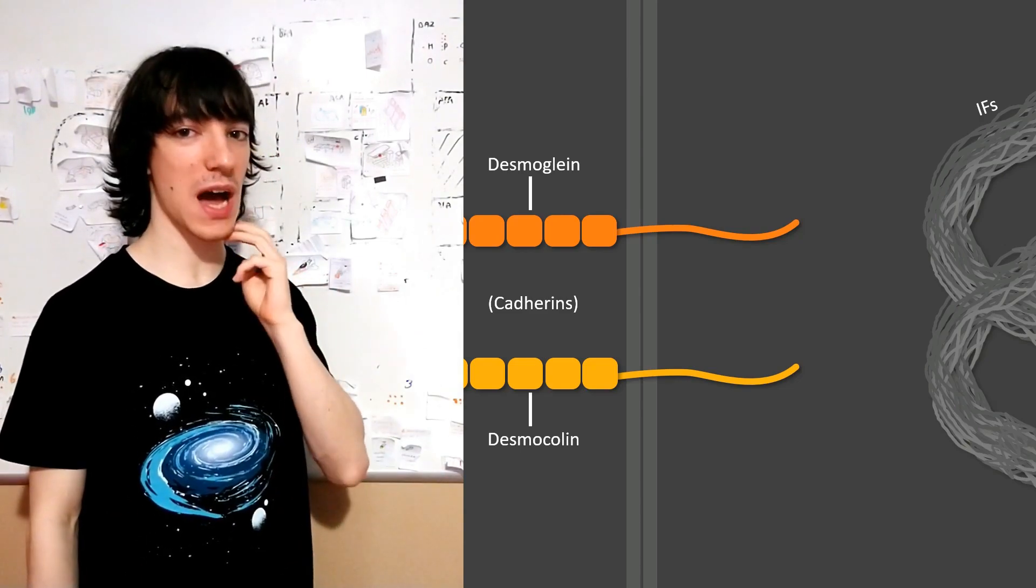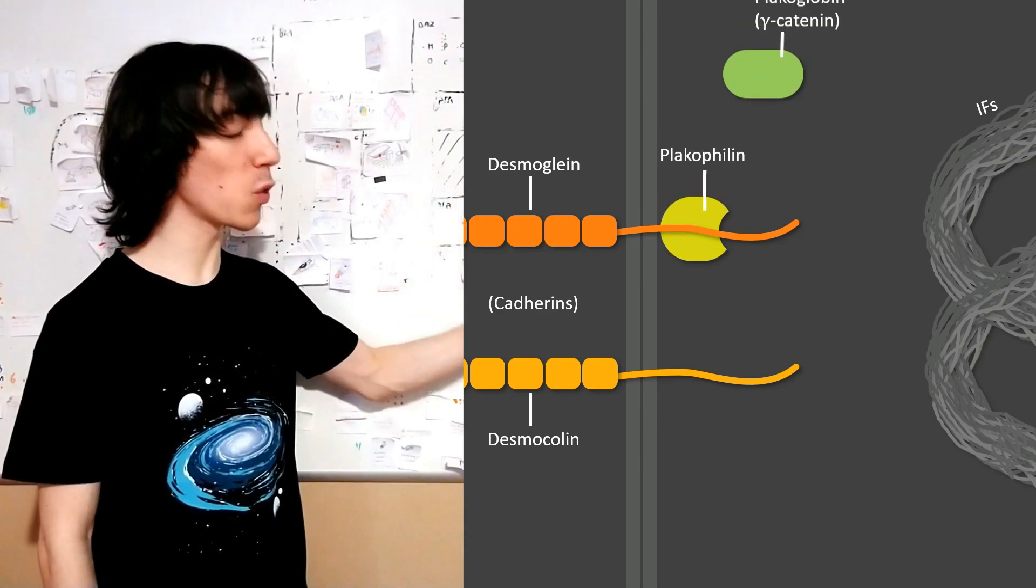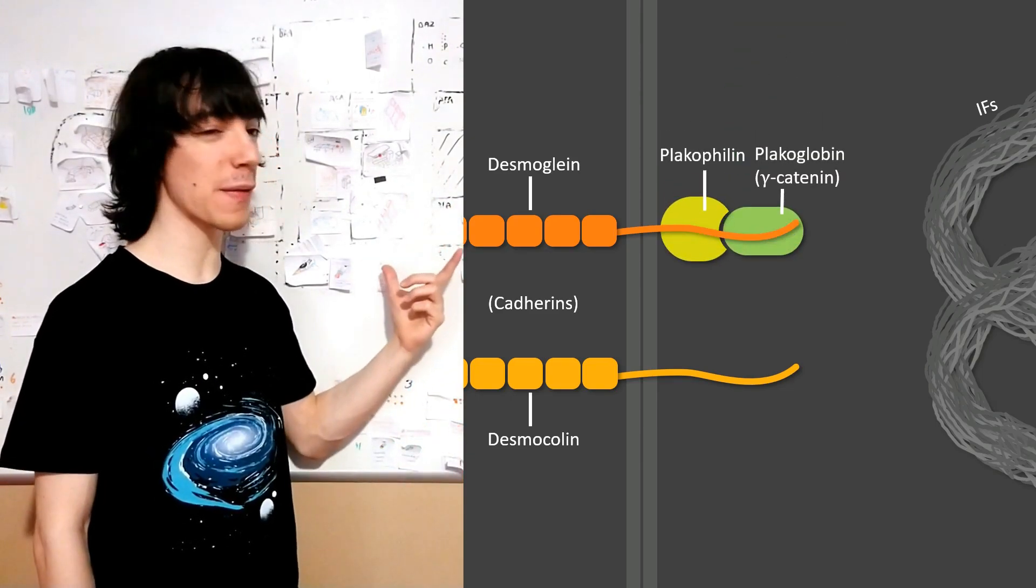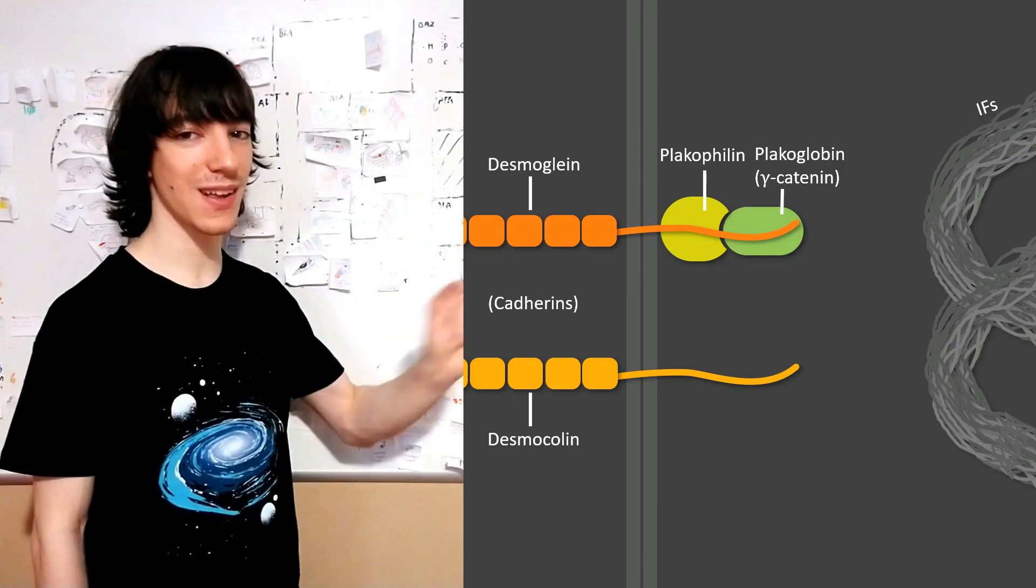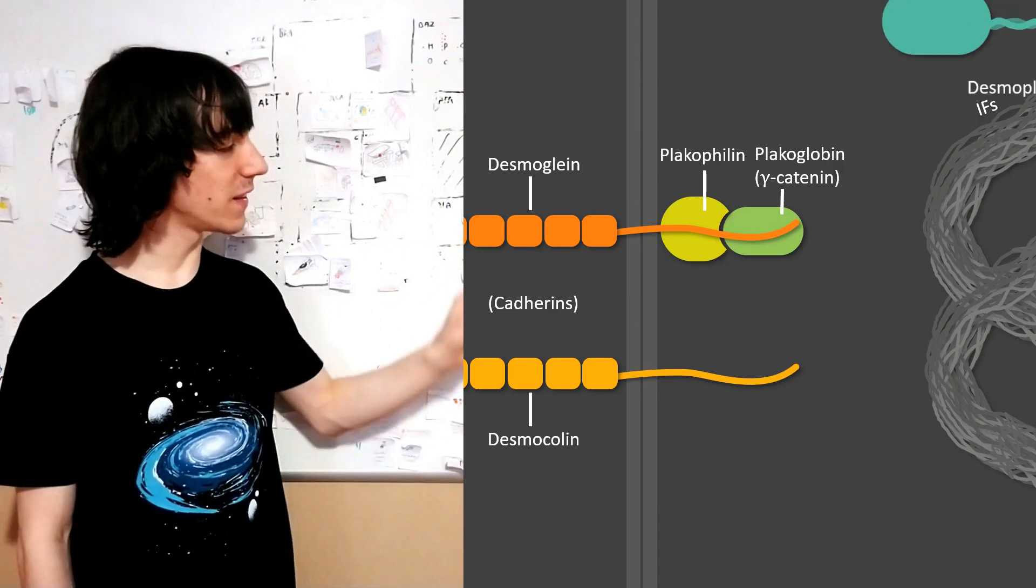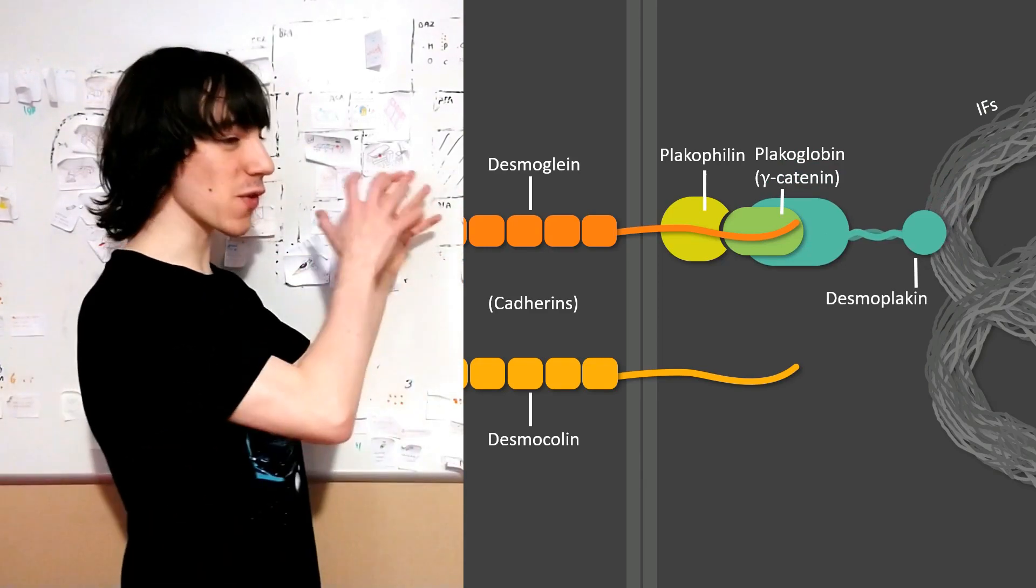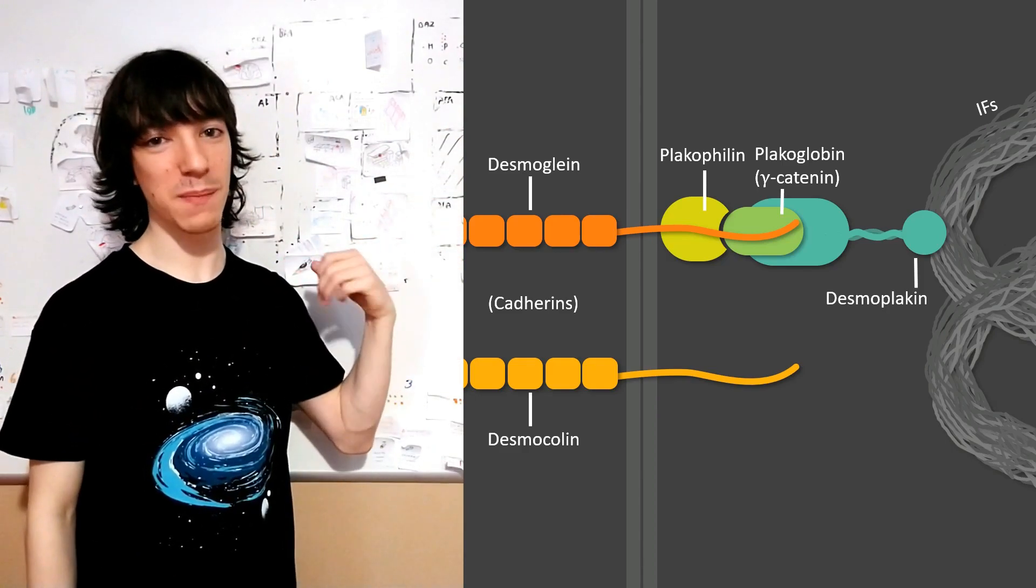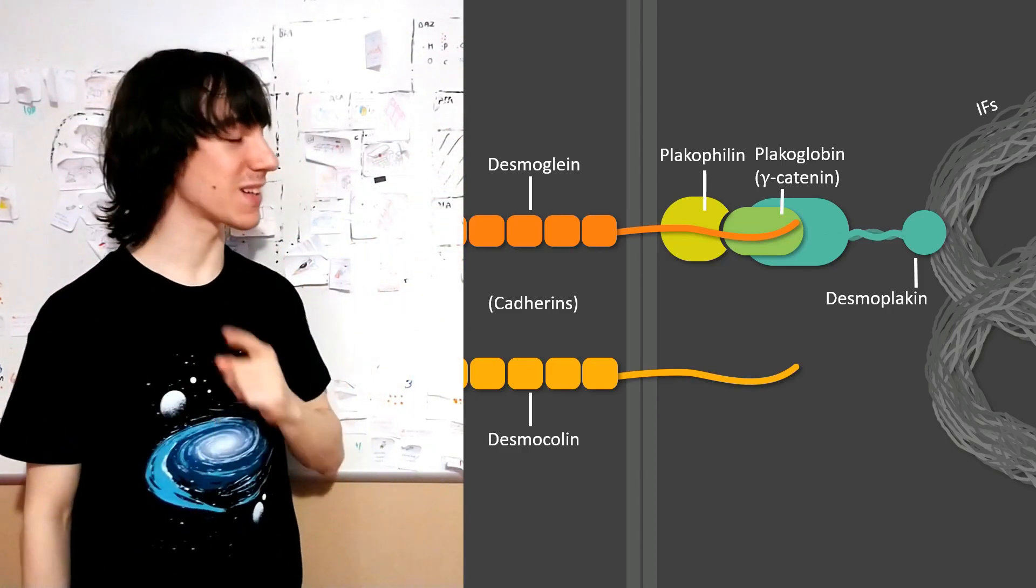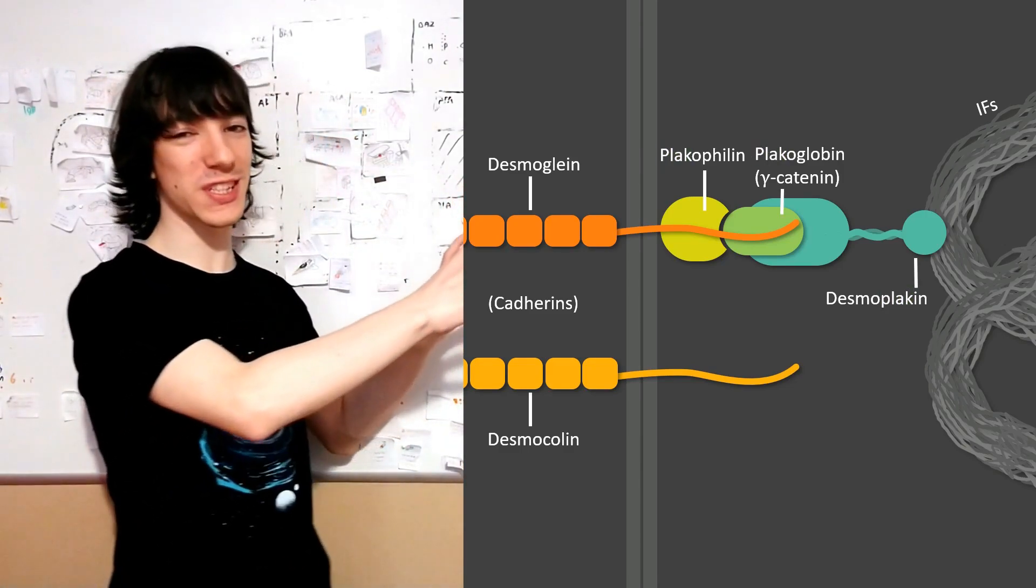The adapters in desmosomes are three. We have plakophilin and plakoglobin, interacting with desmoglein, but not able to interact with intermediate filaments. And we have desmoplakin, which can interact with both this complex of cadherins and the other plakophilin and plakoglobin. And it can also interact with intermediate filaments, bringing all of those things together.